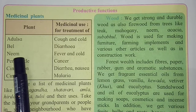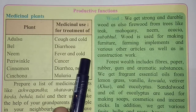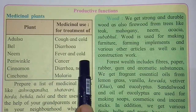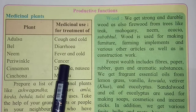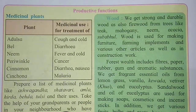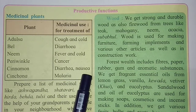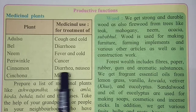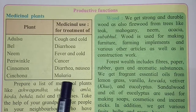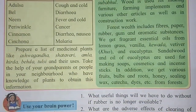Periwinkle has a very big benefit — it is used for cancer treatment, for the medical treatment of different diseases. Cinnamon is found in our spices and is useful for diarrhea and nausea — nausea means when the smell of food is unpleasant and causes vomiting. Cinchona is effective for malaria. In this way, these are some of the productive functions of the forest from medicinal plants.